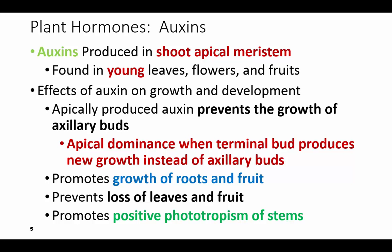It's going to keep the leaves and the fruit from falling off. In fact, some farmers will spray auxin on their trees to keep the fruit from dropping off too early. It promotes positive phototropism of the stems, where they grow towards the sun.